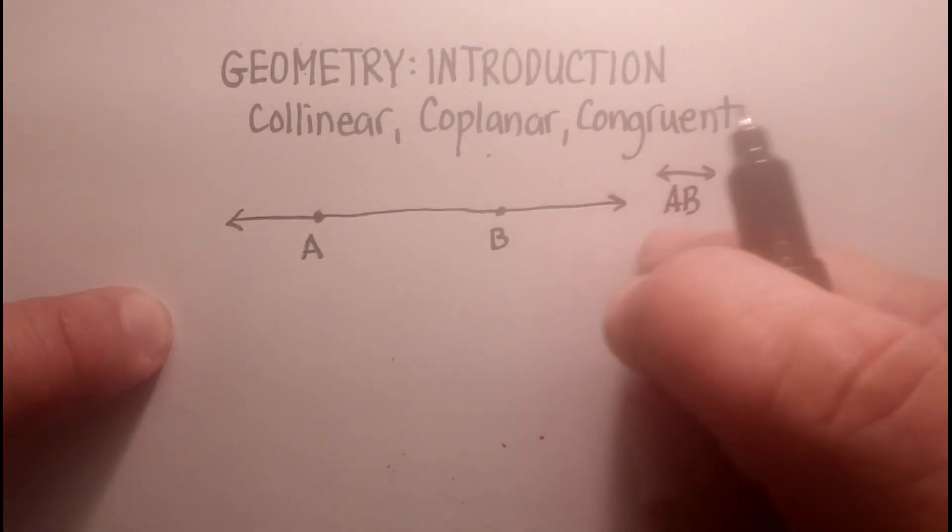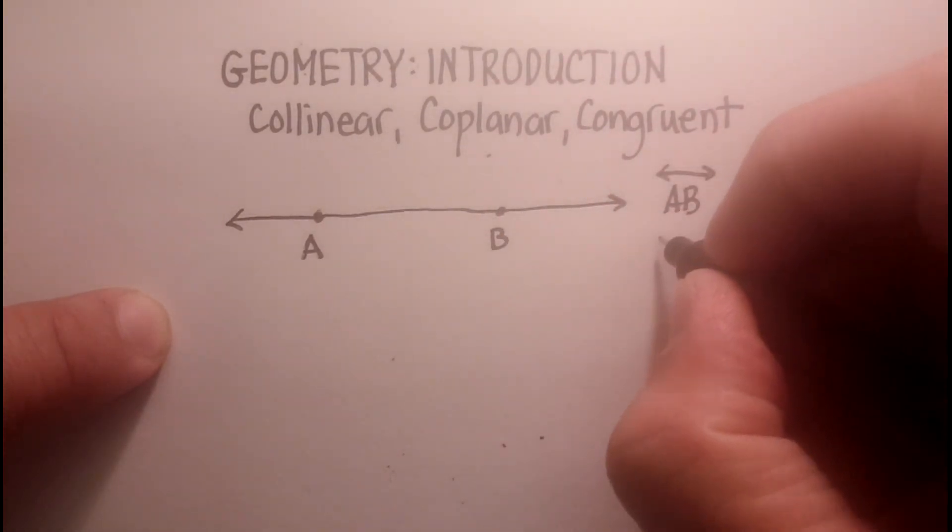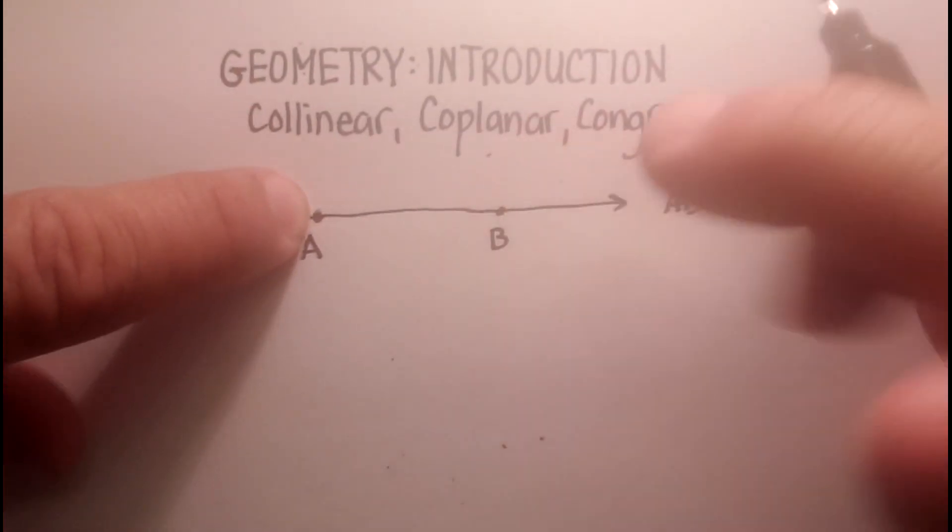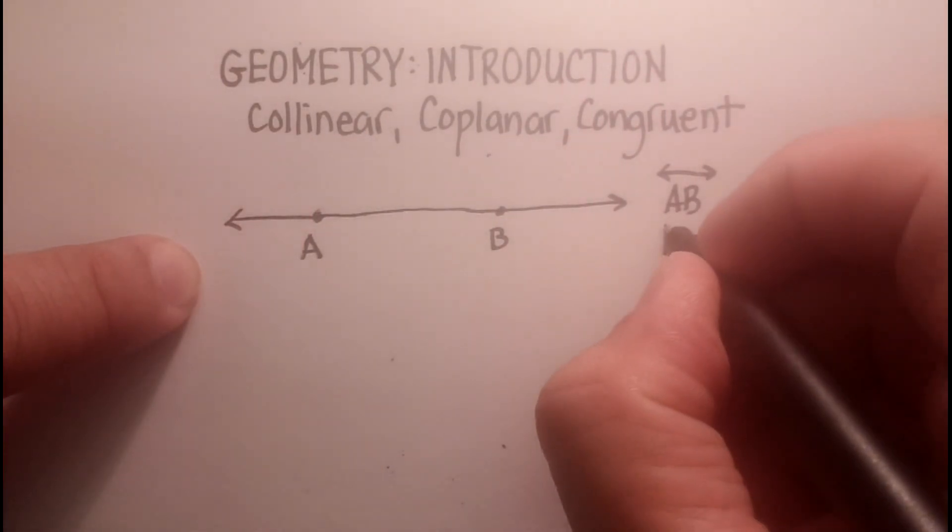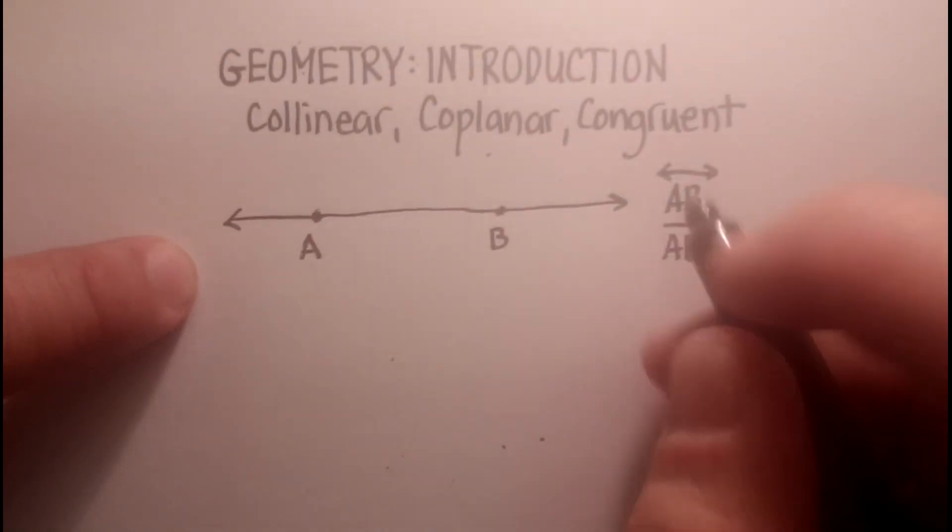If it were a line segment, this is just a little extra. If it were just a line segment, like just from there to there, I would designate it this way with just a line. Again, no arrows.